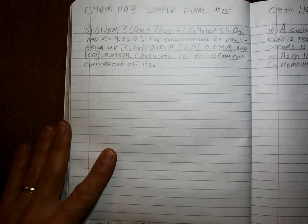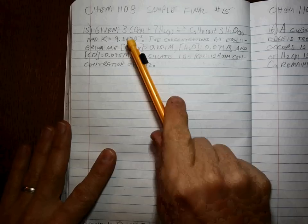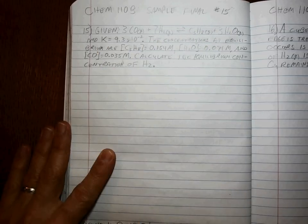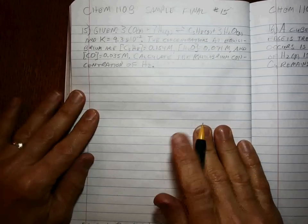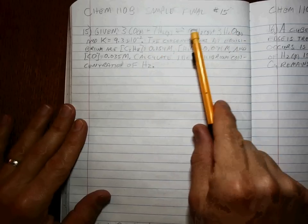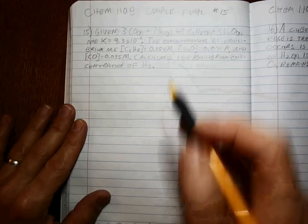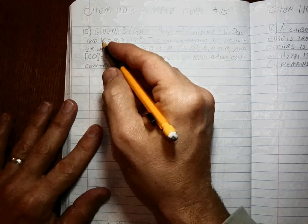Chem 110b sample final number 15. Given this equilibrium reaction and a K value, the equilibrium constant, and a whole bunch of concentrations at equilibrium, we want to find the equilibrium concentration of H2. Well, anytime you're given K or you need to find K, you need to write